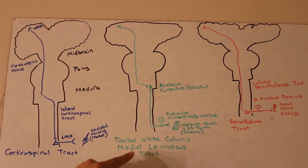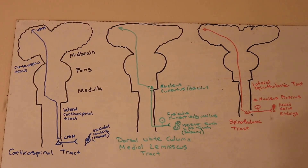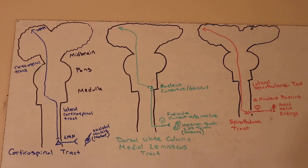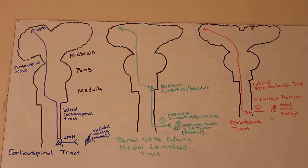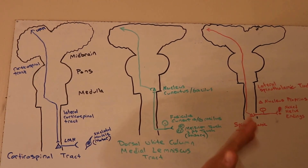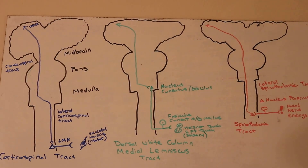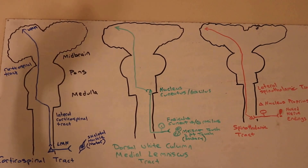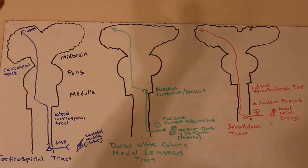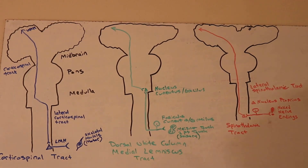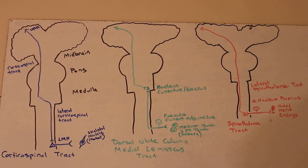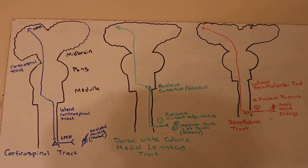Now, the dorsal white column medial lemniscus tract handles two-point touch, light touch (or crude touch), and proprioception — letting you know where you are in space. For example, if your left hand is raised or held at your hip, the dorsal white column medial lemniscus tract is responsible for communicating with your brain where your hand is at any given time. That's called proprioception.